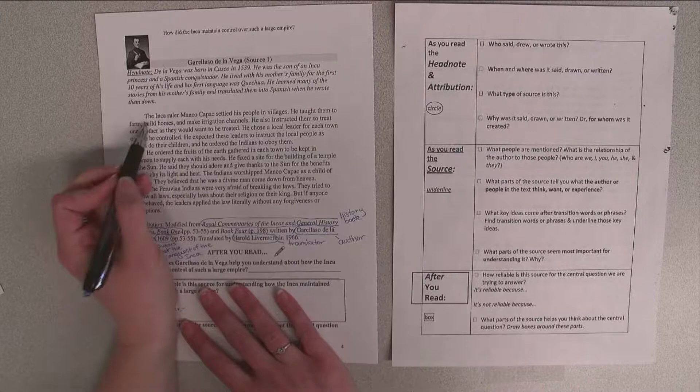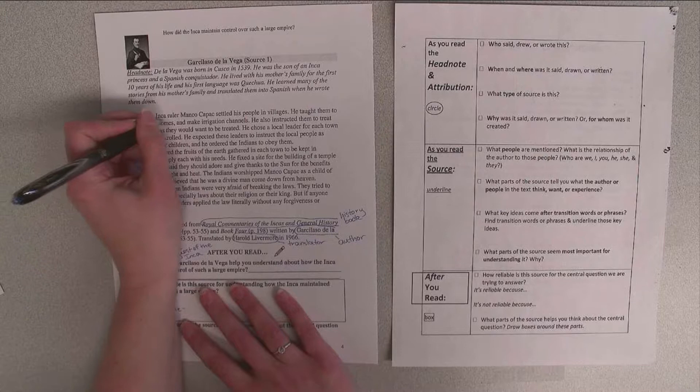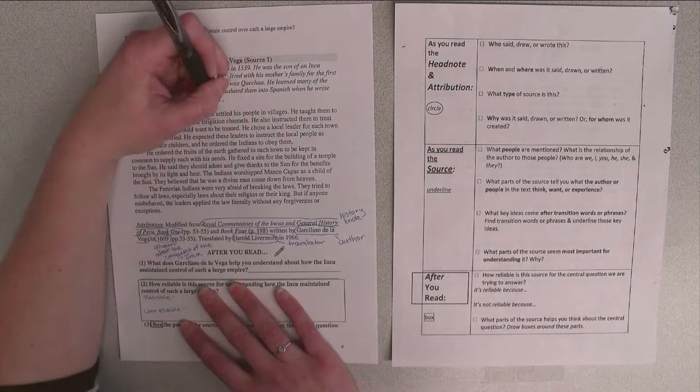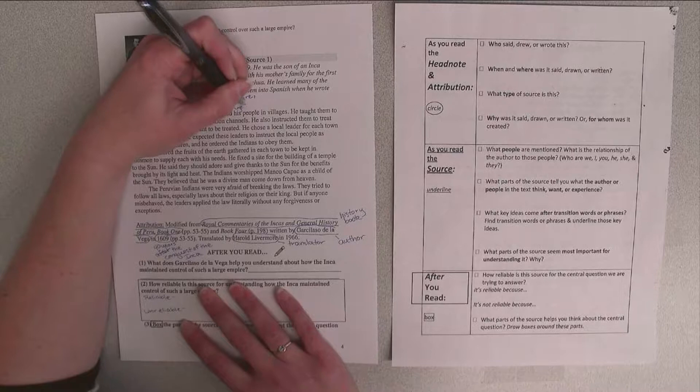And I'm going to start with this first paragraph. The Inca ruler Manco Capac settled his people in villages. So I'm going to underline this first person I came across and I know he's a ruler. And I also know that he was a ruler in the first empire around the year 1200.